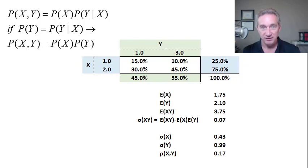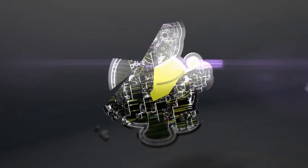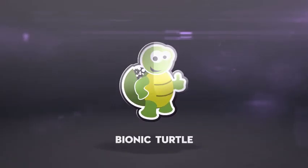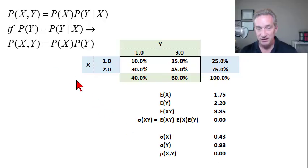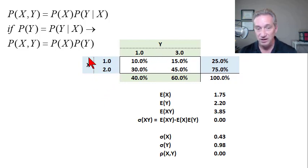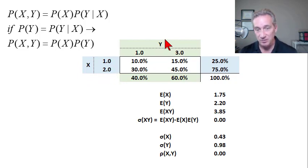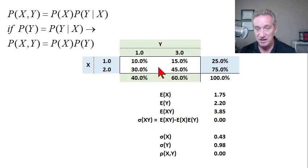What is the statistical test of independence between random variables? To illustrate this, I've tried a very simple example between two random variables, X and Y. X in blue can only have two outcomes, one or two. And my random variable Y in green can only have two outcomes also — one or three. That means between them we have four joint outcomes and four joint probabilities.